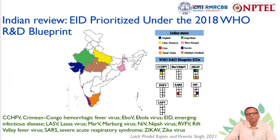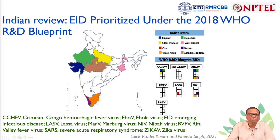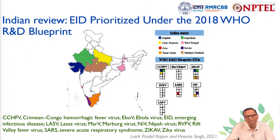Taking an Indian review of the emerging infectious diseases prioritized under the WHO R&D Blueprint, the map shows states in different colors reflecting their vulnerability to these diseases according to the WHO R&D Blueprint, as shown in the checkered boxes on the right of the screen.